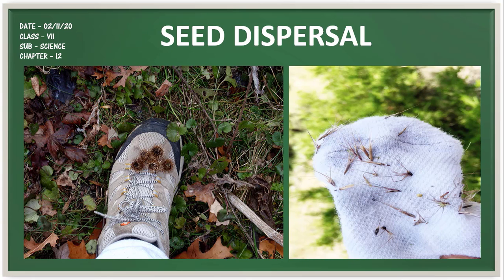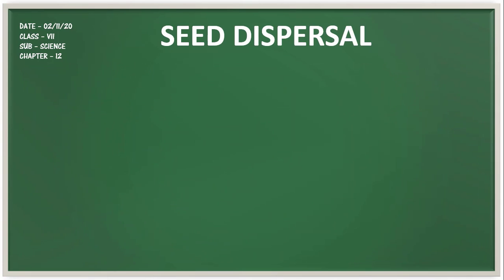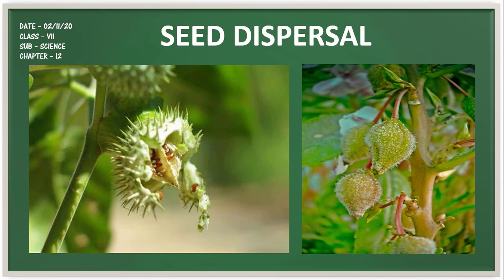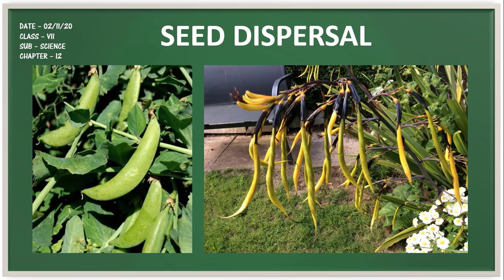Some seeds are dispersed when fruits burst open with sudden jerks, scattering seeds far from the parent plant — this happens in castor and balsam. Some plants like peas and flax have seed pods that dry out once the seeds are ripe; when dry, the pods split open and the seeds scatter.